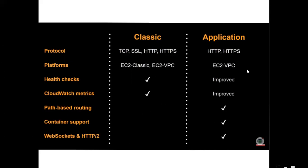But with the Application Load Balancer, it supports path-based routing. For example, example.com can route traffic based on the URL path. If you configure path-based routing, you can direct requests to specific application routes.